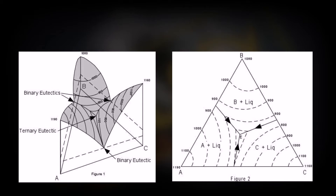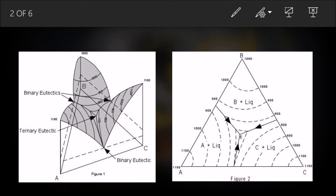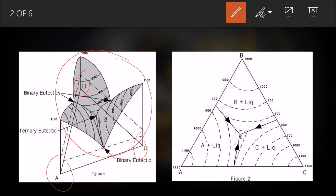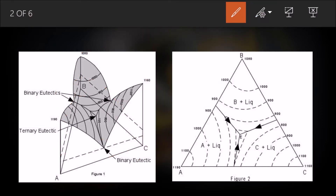Last time we ended with these two diagrams. In this first diagram you can see a three-dimensional representation of a three-component system. One component is A, one is B, and one is C. You should note that the composition is measured along the sides of the base triangle.